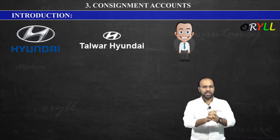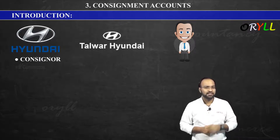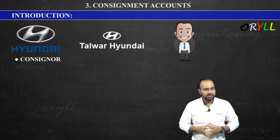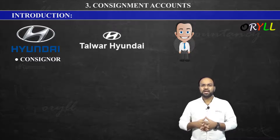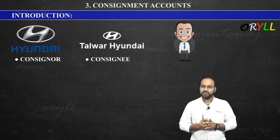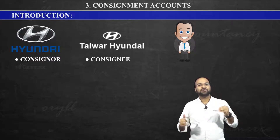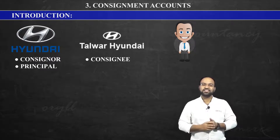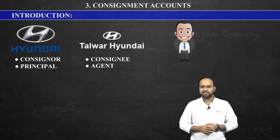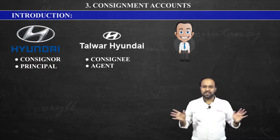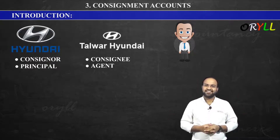So, in this consignment business, Hyundai Company will be called the consignor — the main person is called the consignor. And Talwar Hyundai will be called the consignee — the agent is called the consignee. Hyundai Company is also called the principal, because he is the main person. And Talwar Hyundai is called the agent. The customer is simply called the customer. This is what happens in the consignment contract or consignment business.